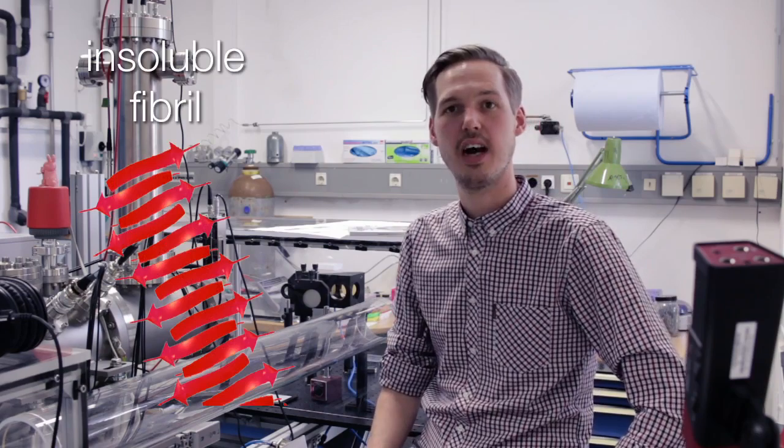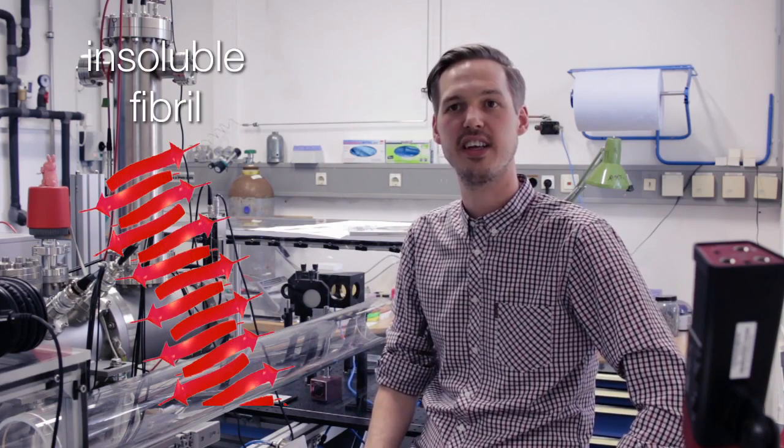Amyloid fibrils which consist of a beta-sheet structure are found in organs and tissue at a later stage of the disease.